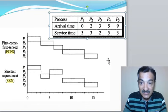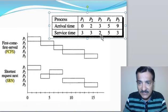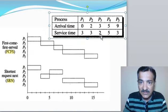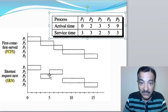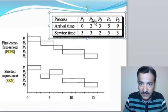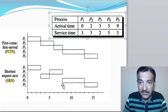Process 3 executes for 2 seconds, not process 2. After 3 plus 2 equals 5 seconds, process 4 has also arrived, which is 5 seconds in size. However, process 2 is only 3 seconds, which is smaller than process 4's 5 seconds. So process 2 is given for execution from the 5th second and executes for the next 3 seconds. After that, at 8 seconds, there is no other process in the queue except process 4, so process 4 is taken up for execution and executes for the next 5 seconds.